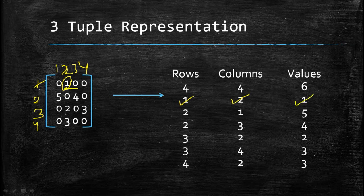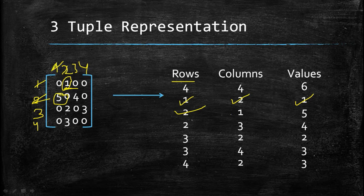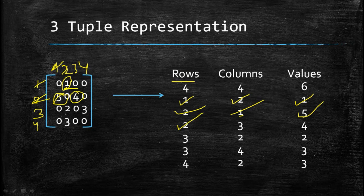Continuing the example: the element 4 is in the second row and third column, so we write row 2, column 3, value 4. In this way, each non-zero element's row index, column index, and value are recorded in the three-column table. That is how we represent a sparse matrix in three-column representation — it is straightforward.